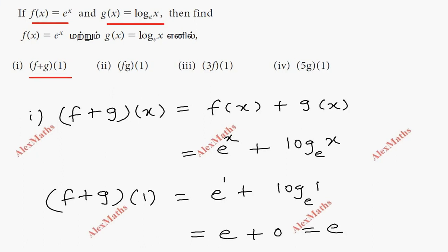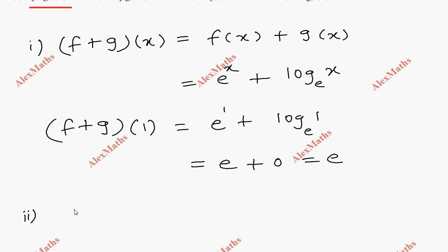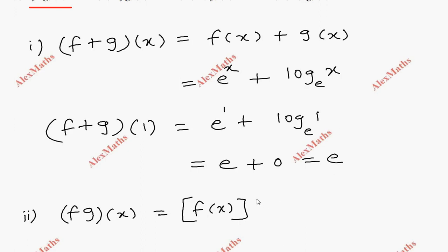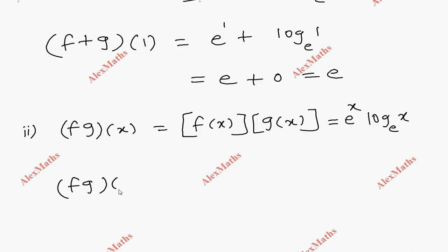For the second operation, f into g of 1. So f into g of x is f of x times g of x. Here f of x is e power x and g of x is log x base e. Substituting x equal to 1, we get e power 1 into log 1 base e, which is e into 0. The total answer is 0.